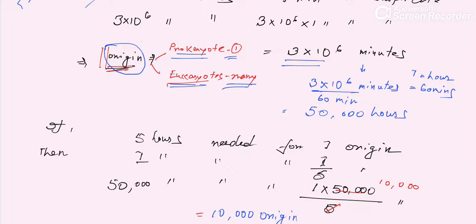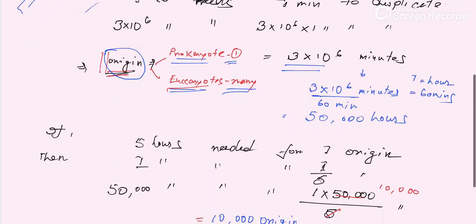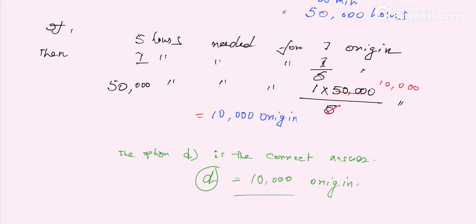So there are 10,000 origins needed for the completion of replication of 3×10⁶ kb of DNA in eukaryotes. The options given were 1, 3, 300, and 10,000. According to our calculation, option D — 10,000 origins — is the correct answer. Thank you for watching; please like and subscribe.